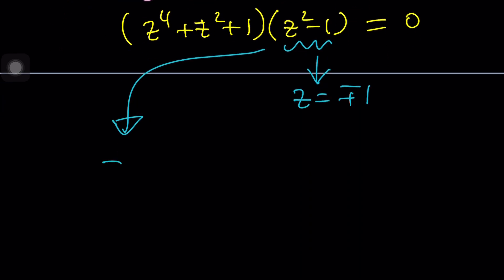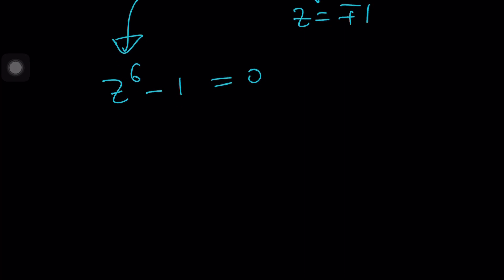Now under those conditions, let's go ahead and simplify this. If you do the math, you're going to realize, hey, this turns into z to the six minus one equals zero, which means z to the six equals one. And z,